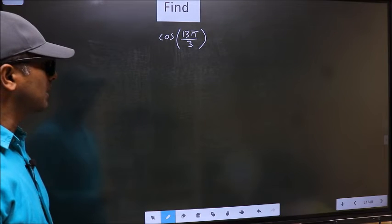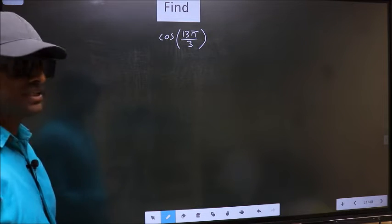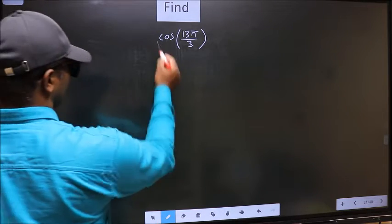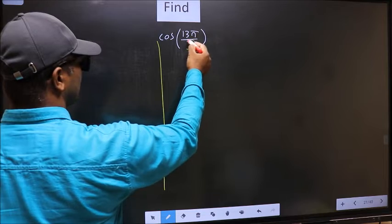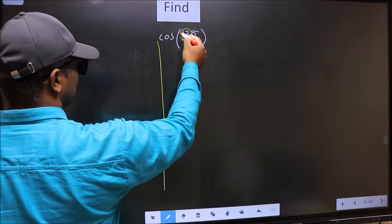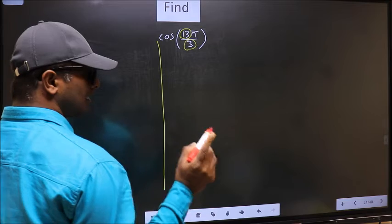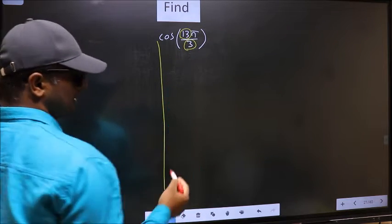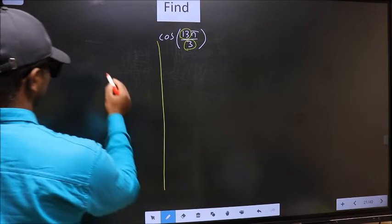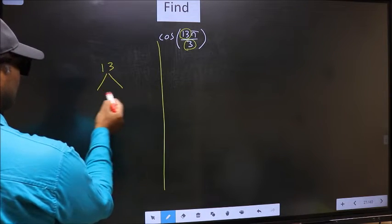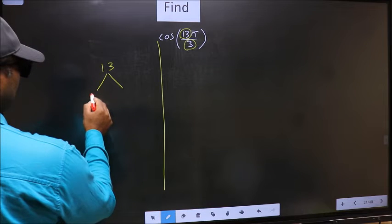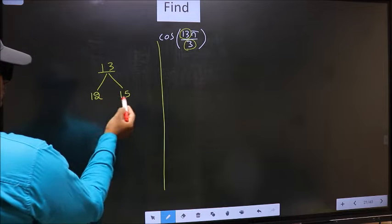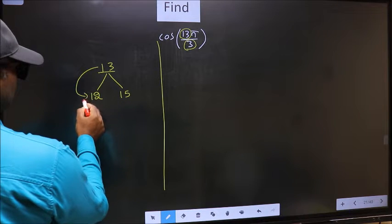Find cos 13π/3. To find this, we should follow this method. In the denominator we have 3, and in the numerator we have 13. Now you should check: 13 is close to which multiple of 3? Write multiples of 3, that is 12 and 15. Now 13 is close to which multiple? It is close to 12.